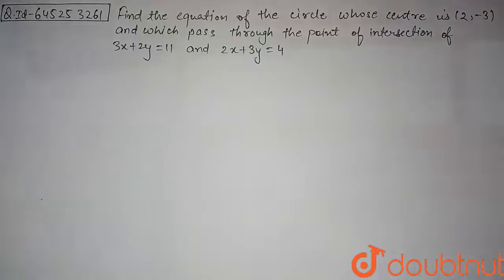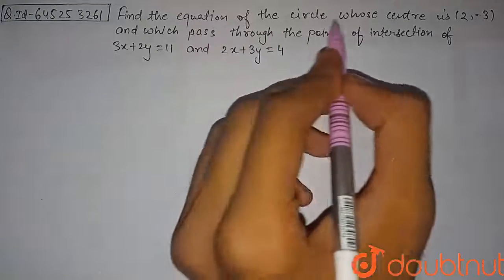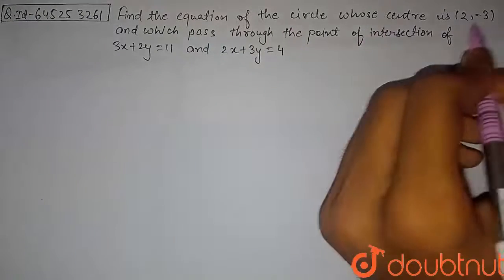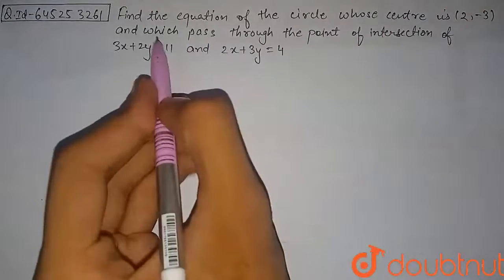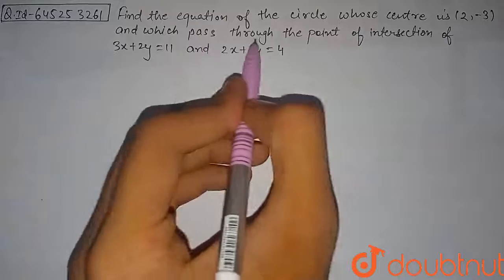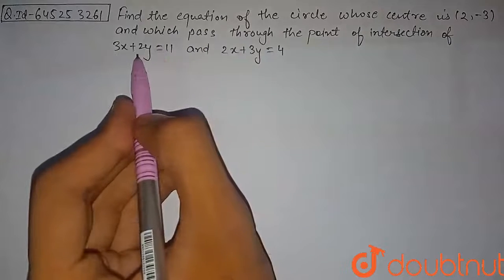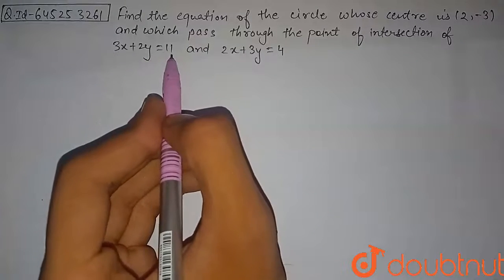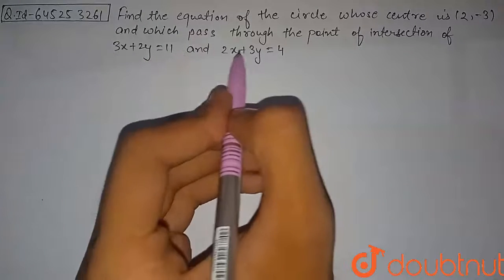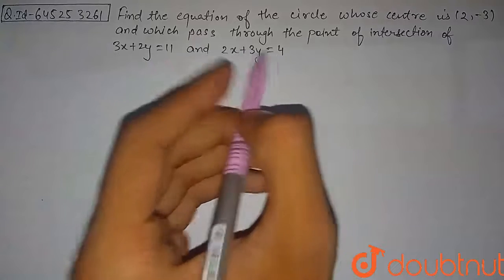Hello students, let's discuss the question. Find the equation of the circle whose center is (2, -3) and which passes through the point of intersection of the two lines: 3x + 2y = 11 and 2x + 3y = 4.